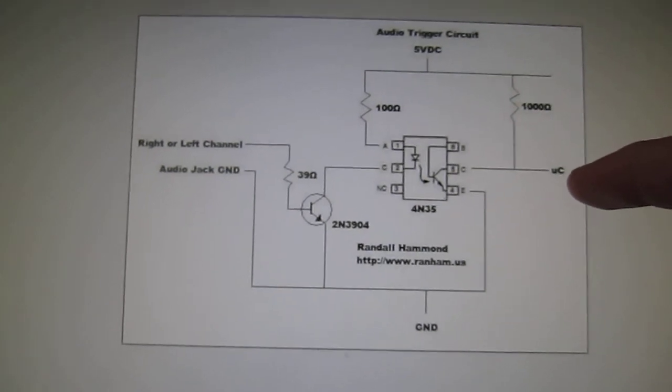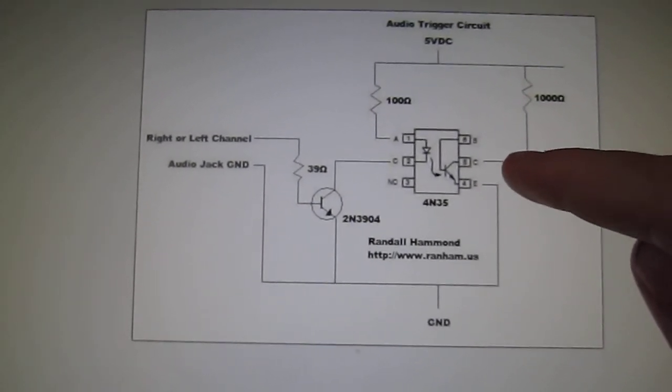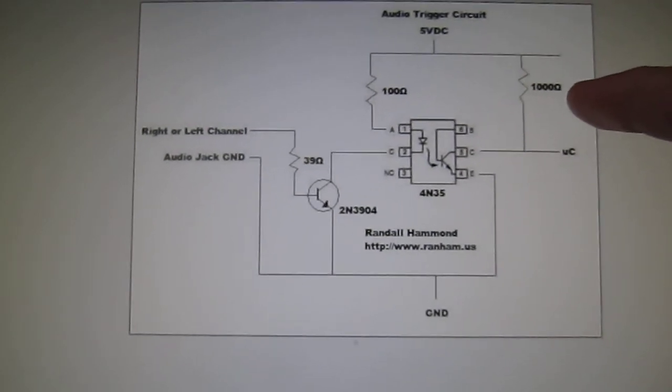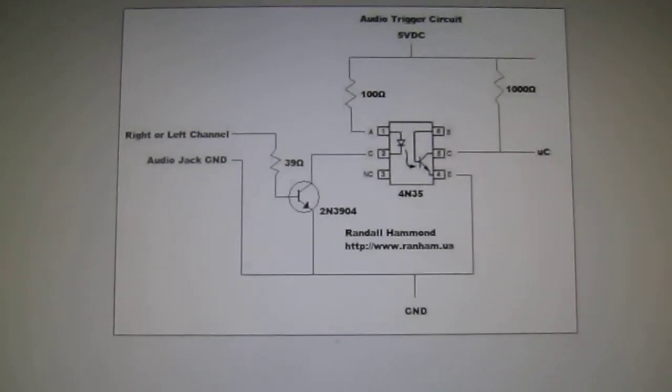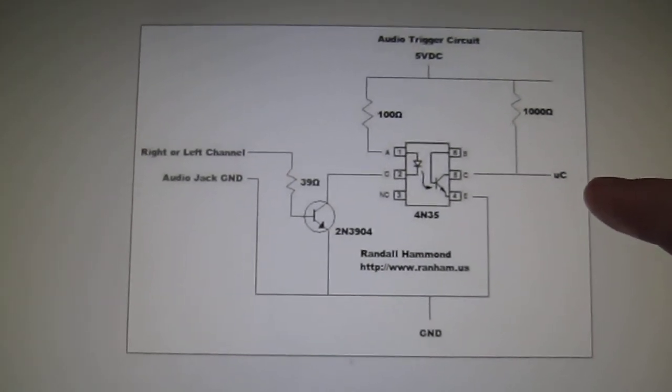Now the pin going to the microcontroller is between the collector and the 1000 ohm resistor. And it's going to an external interrupt pin on the microcontroller.